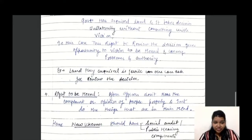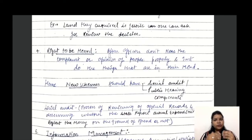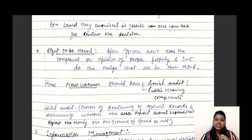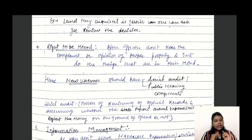The fourth method is the right to be heard. Often, officers don't hear complaints or opinions of people properly and just act on their own judgment. To address this, there should be mechanisms like social audits, public hearings, and complaint systems. A social audit is the process of reviewing official records to determine whether reported expenditures reflect what was actually spent on the ground.